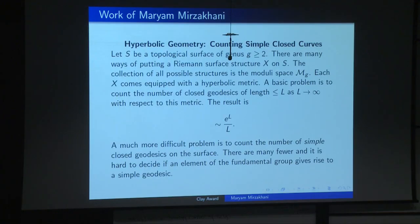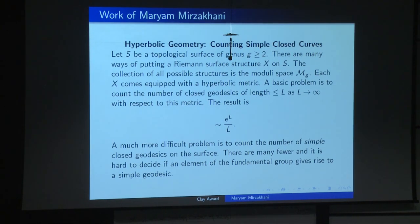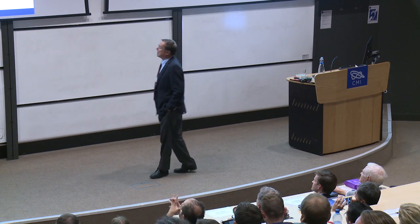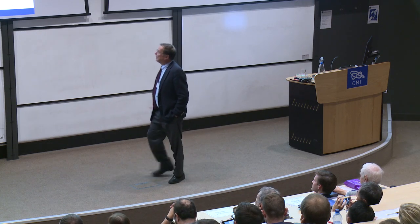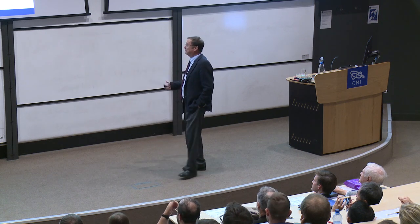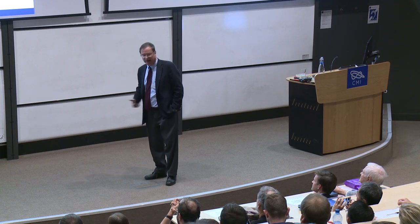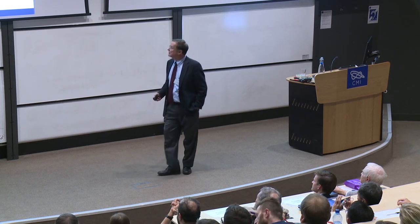This grows exponentially — as e^L — and as Mirzakhani pointed out, it doesn't depend on the genus or the particular surface X. A more difficult problem is to count the number of simple closed curves. What she was talking about more generally is counting curves with k self-intersections. Counting simple closed geodesics — there are many fewer, and it's hard to decide if an element of the fundamental group gives rise to a simple geodesic.